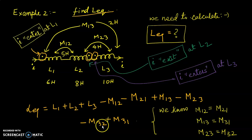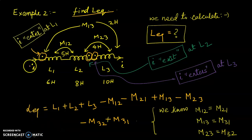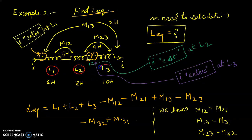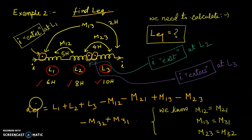In example number two, we have to find L equivalent. We have inductors L1, L2, and L3 connected in series with values 6H, 8H, and 10H respectively. The mutual effect between inductor 1 and 2 is M12 = 5H, between inductors 2 and 3 is M23 = 4H, and between inductors 1 and 3, denoted M13 or M31, is 2H.